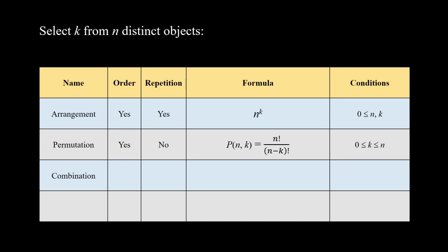The third one is combination: here the order is not important and repetition is not allowed. The formula is n factorial over k factorial times n minus k factorial. We call this n choose k, also denoted C(n,k).